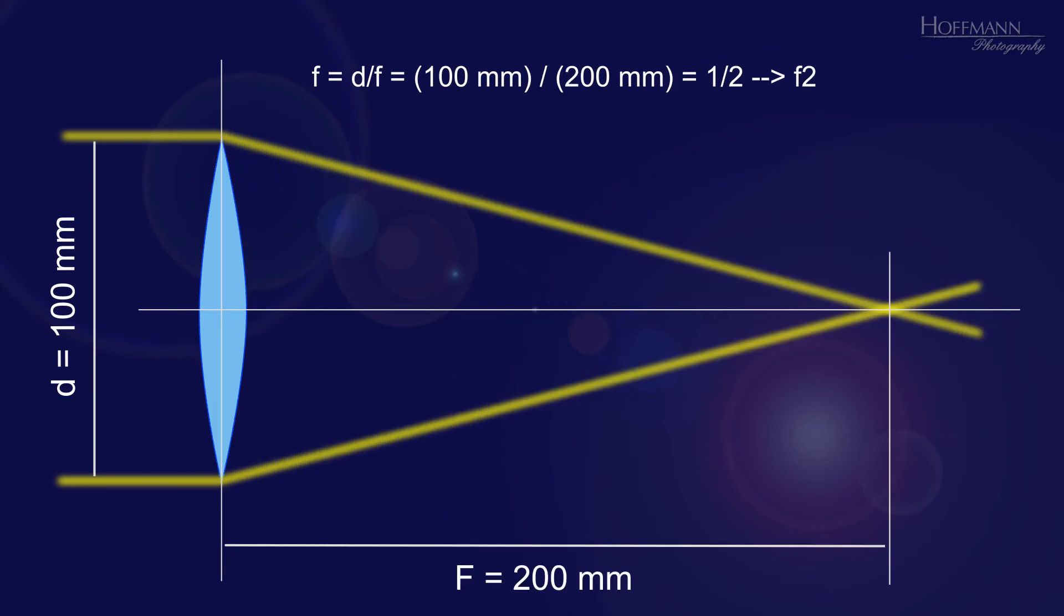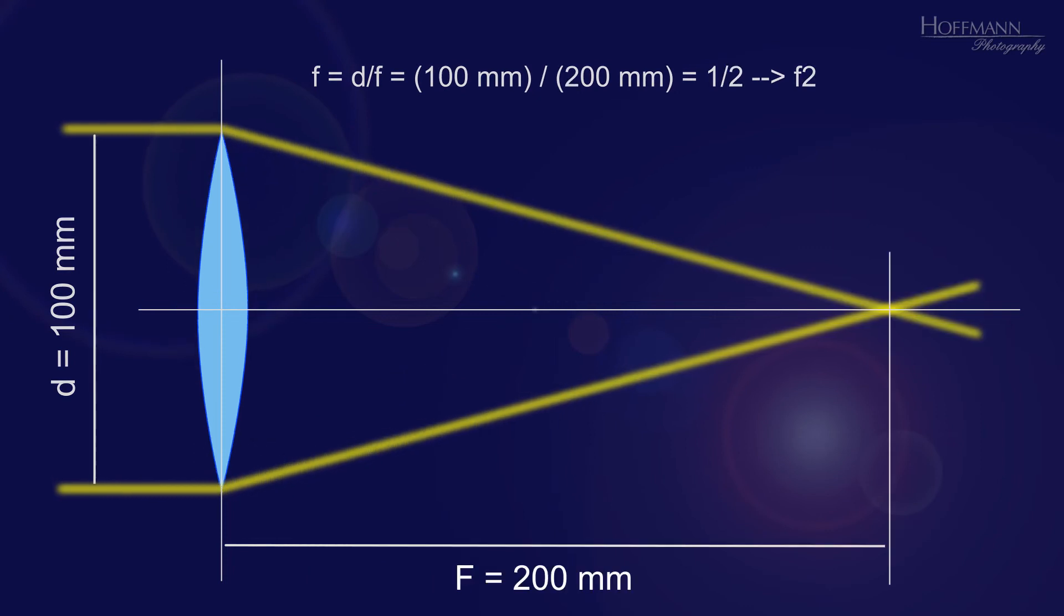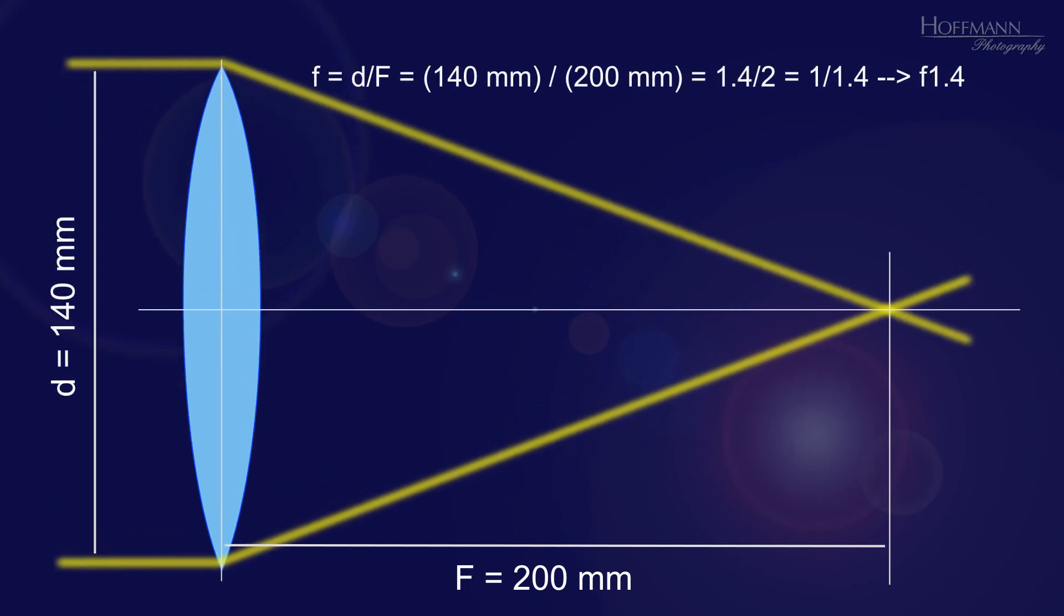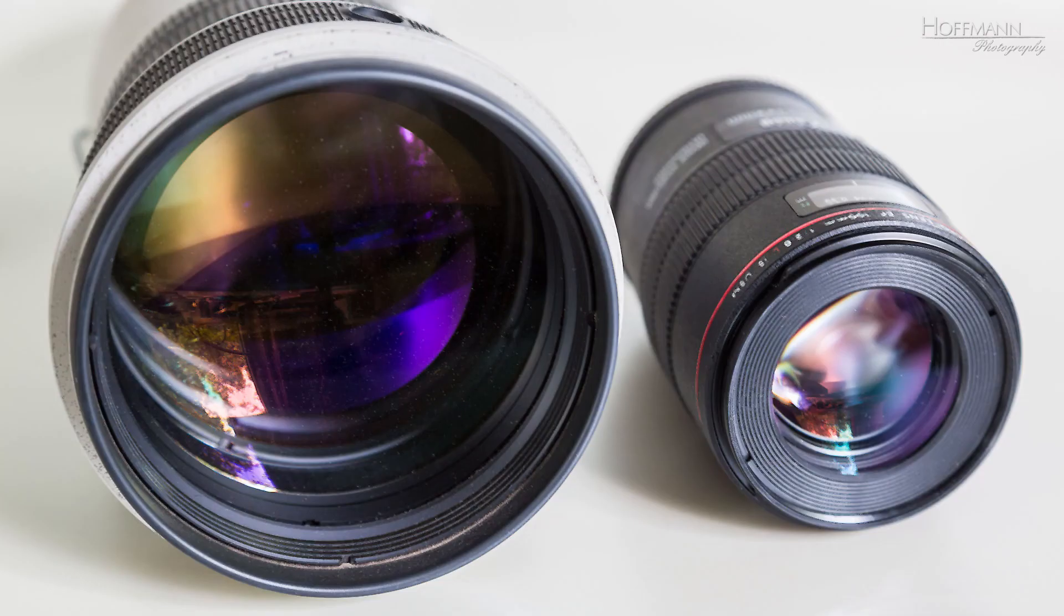If the lens diameter is increased for a given focal length, the aperture is also increased. If we were to increase the lens diameter from 100 mm to 140 mm for a focal length of 200 mm, the resulting maximum aperture would be f1.4. This is a reason why lenses with the same maximum aperture but different focal lengths have different diameters.